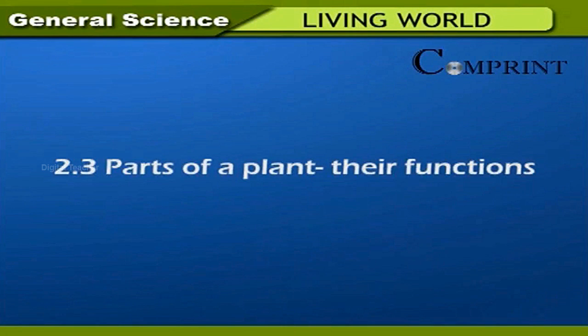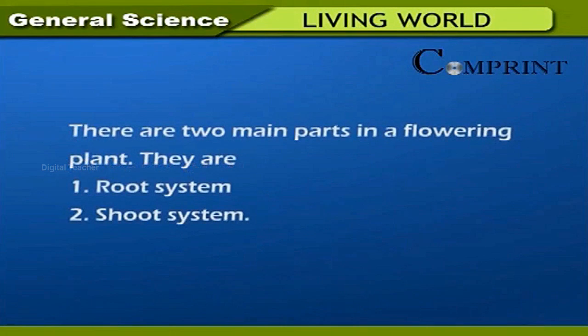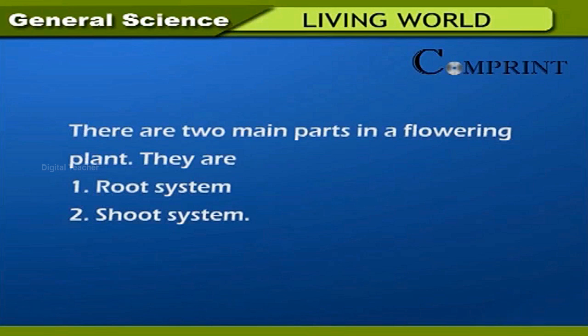Parts of a plant and their functions. There are two main parts in a flowering plant. They are: one, root system; two, shoot system.